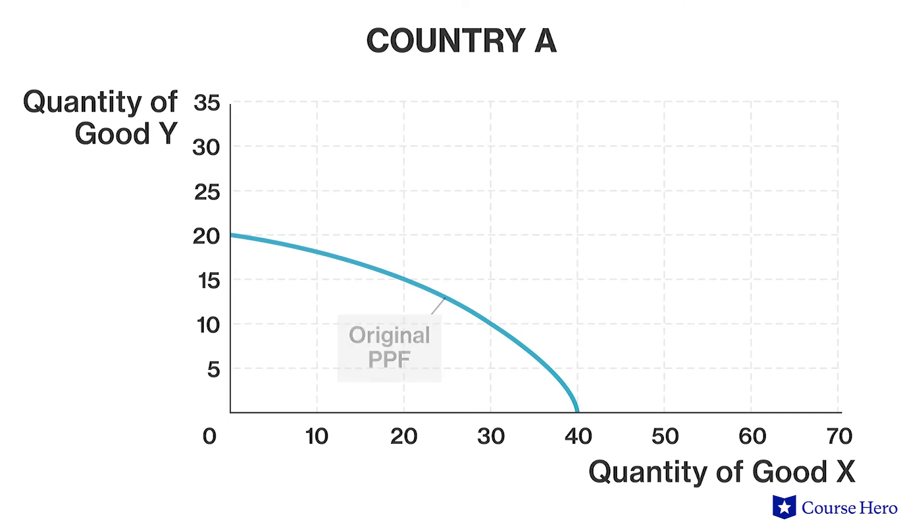The curve of the original PPF shows the increasing opportunity cost. If the PPF is a straight line, the opportunity costs remain the same as production switches from one good to the other.